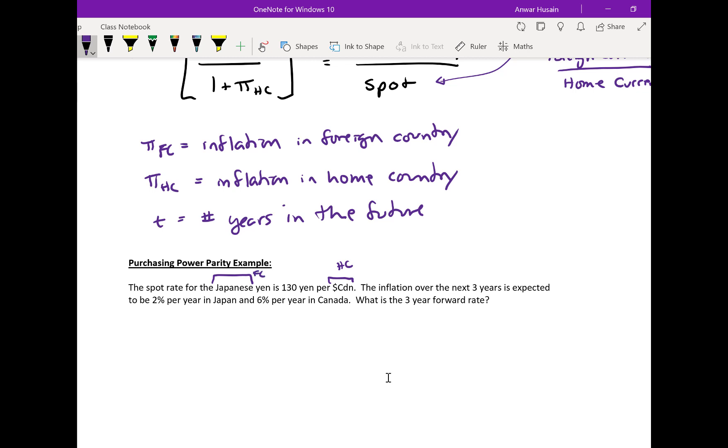We're doing everything per dollar Canadian. Time is we are looking for three years in the future. The inflation rate in Japan is going to be 2% - that's the foreign inflation rate - and the home inflation rate is going to be 6%. And then 130 is the spot rate. So what we are asked to calculate is what is the forward rate at time three, three years from now.